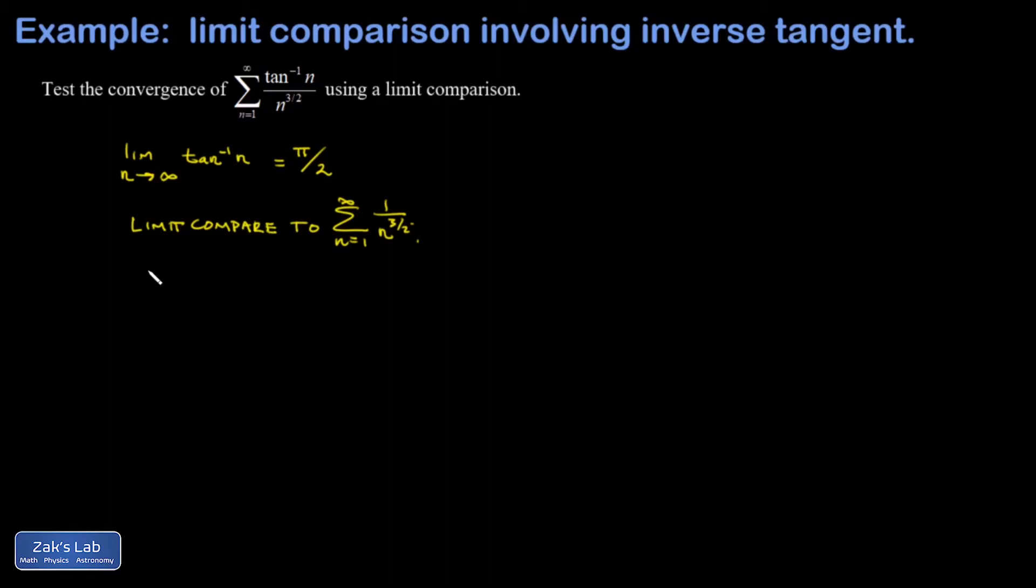So we do our limit comparison. I take the limit as n goes to infinity of the ratio of the terms of our series—inverse tangent of n over n to the three halves—to the terms of the series that we want to compare to. So I want to divide by 1 over n to the three halves.